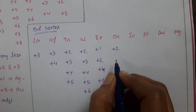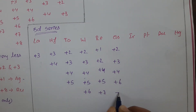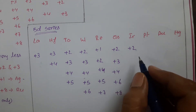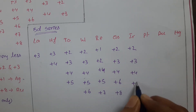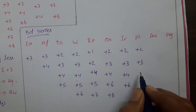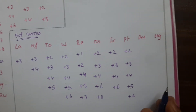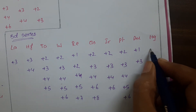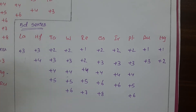Osmium can show plus 2, plus 3, plus 4, plus 6, and plus 8 oxidation states. Iridium can show plus 2, plus 3, plus 4, and plus 6 oxidation states. Platinum can show plus 2, plus 3, plus 4, plus 5, and also plus 6 oxidation states. Gold can show plus 1 and plus 3 oxidation states. Mercury can show plus 1 and plus 2 oxidation states.